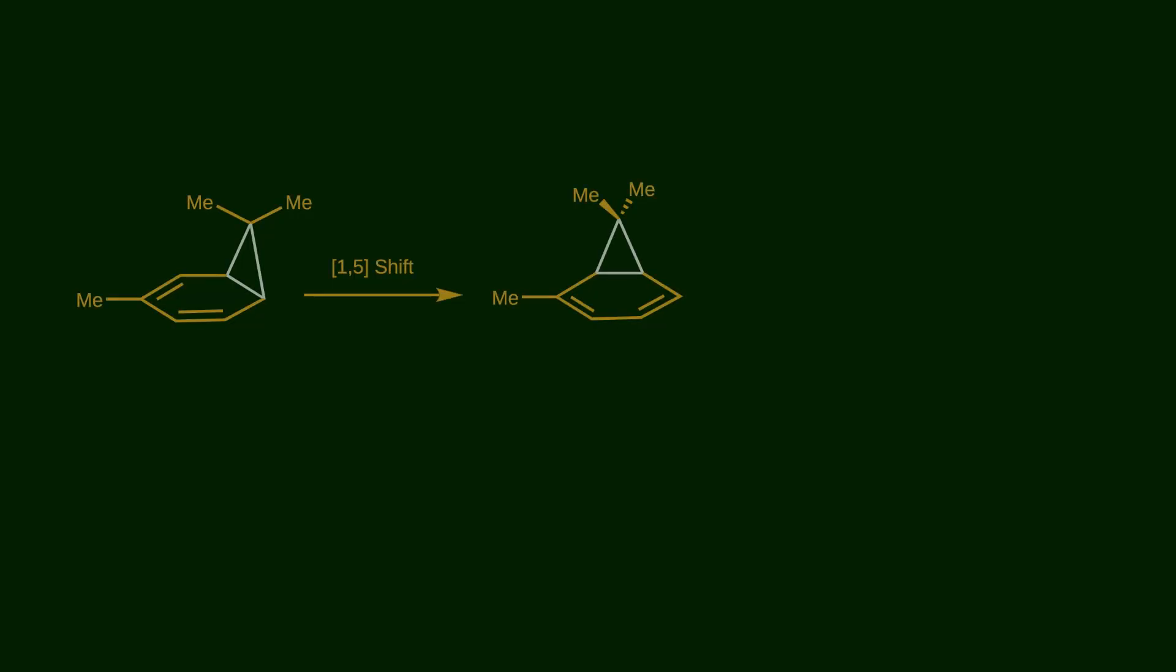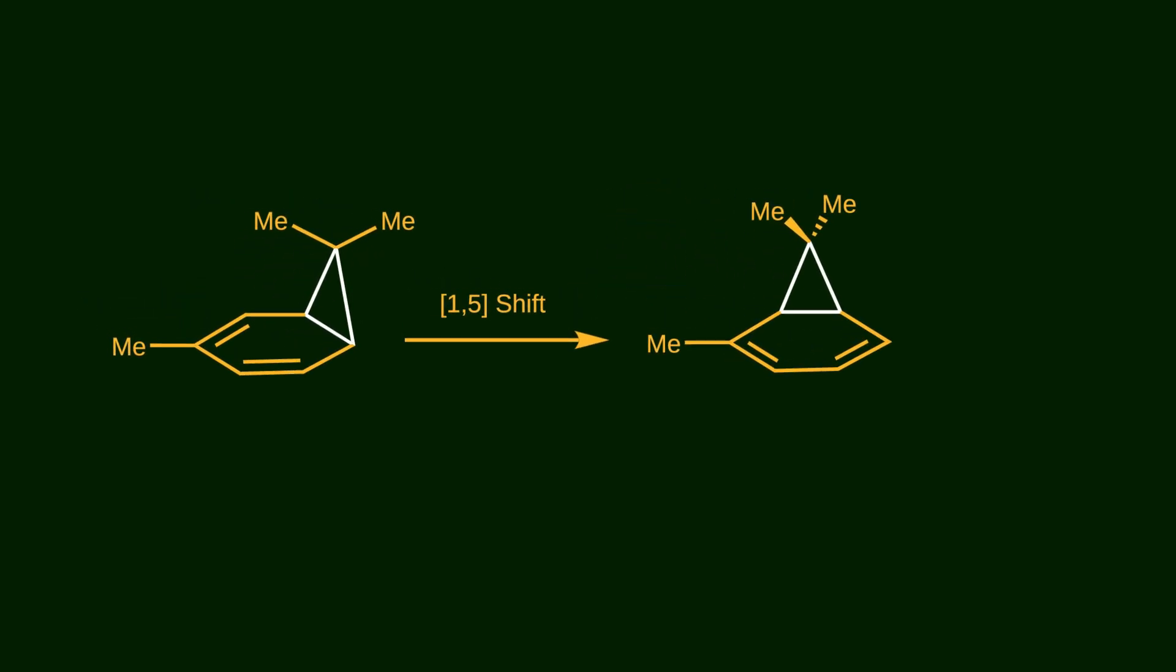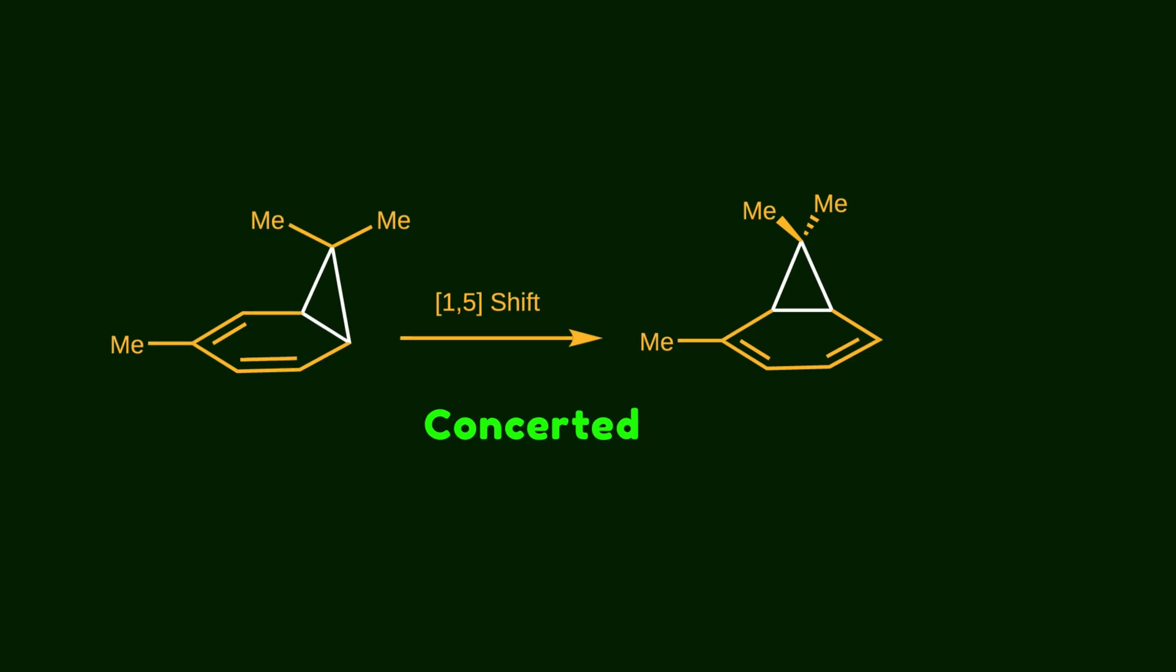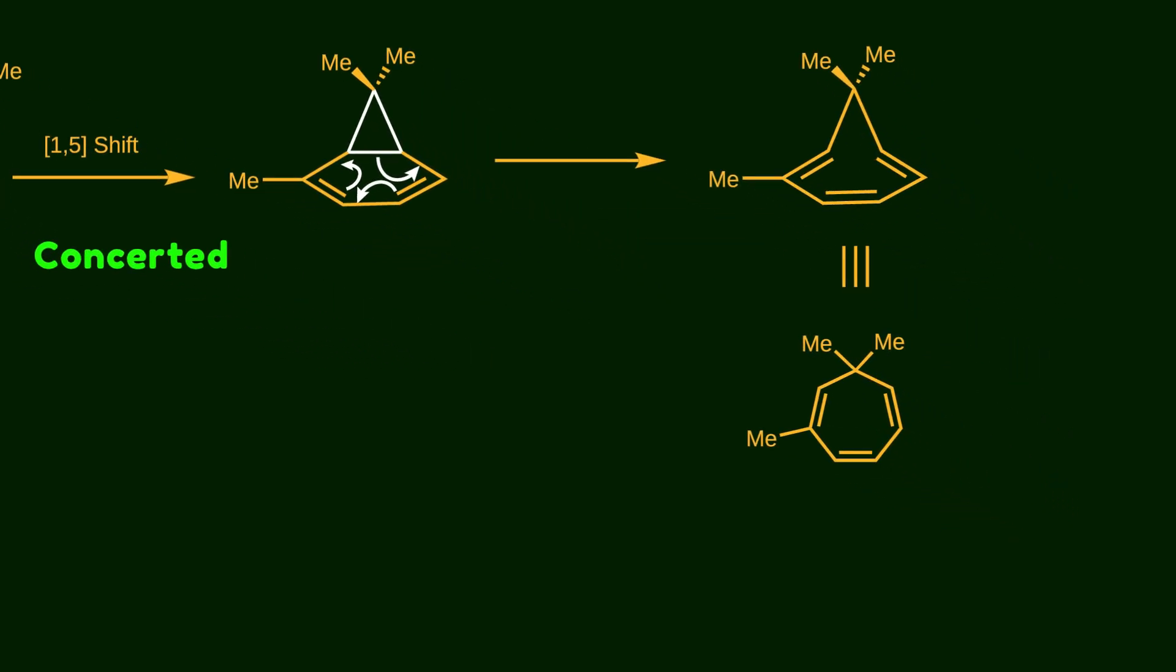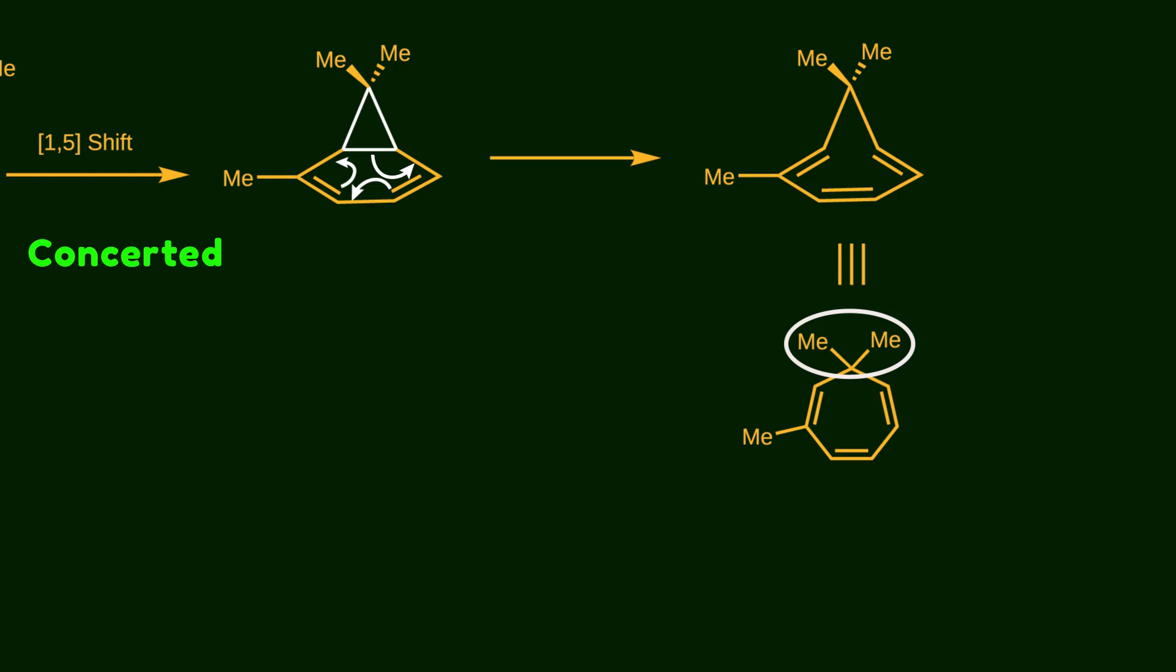Another important point is that this rearrangement is a concerted process, which means there is no intermediate and it occurs in one step. What's happening here is that the location of 3-membered ring shifts with the help of the conjugated pi system. Now what's gonna happen is this carbon-carbon of the 3-membered ring is cleaved, leading to reformation of the tropilidin skeleton. But this time the position of the substituents has changed as a result of the rearrangement.